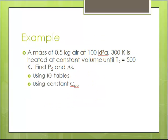Let's look at an example. I have a mass of half a kilogram of air at 100 kilopascals, 300 Kelvin. And I want to heat it at constant volume until T₂ is 500 Kelvin. What I want to do is calculate the final pressure and the delta S, and I want to do this two ways, first using the ideal gas tables, and second using the constant C sub P naught.